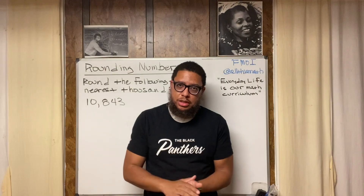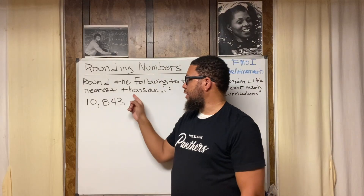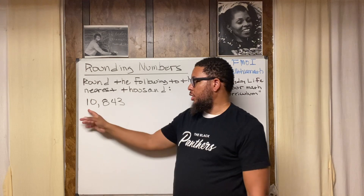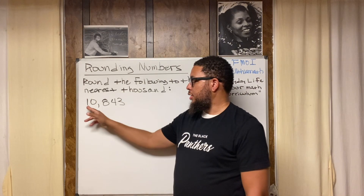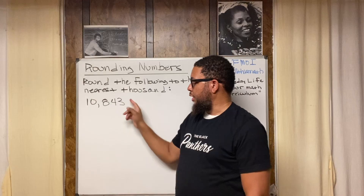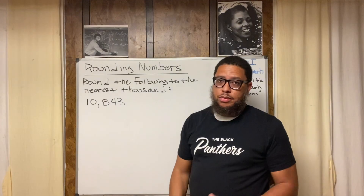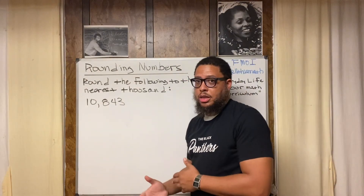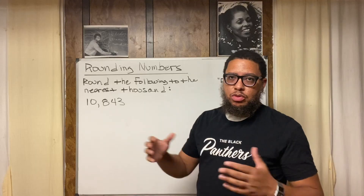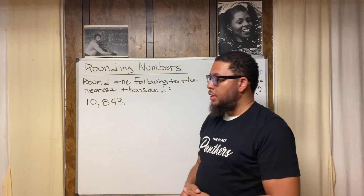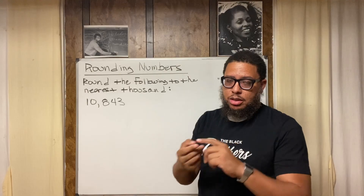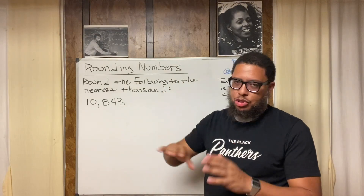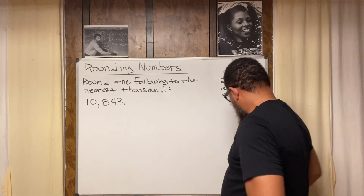More specifically, we're going to round a number to the nearest thousand. The number we're dealing with is 10,843. We're going to do this three different ways: first, the basic algorithm using the rules for rounding; second, a number line; and third, a number line with what I call a rounding hill.